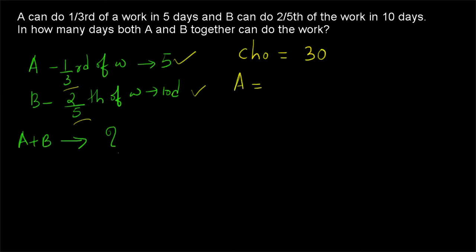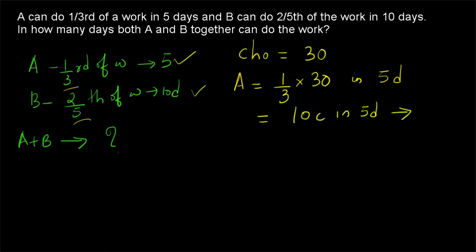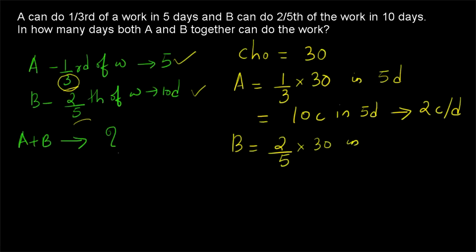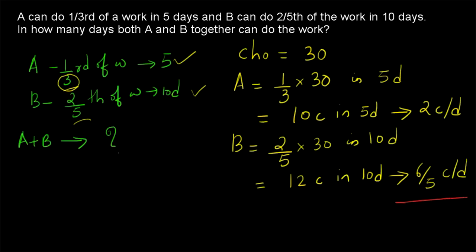A is having one-third of thirty chocolates in five days — that means A is having ten chocolates in five days, giving us two chocolates per day. For B: B is having two-fifths of thirty chocolates in ten days, which is twelve chocolates in ten days, so B is having twelve-by-ten, which is six-by-five chocolates per day. Therefore, A and B together are having two plus six-by-five, which gives us sixteen-by-five chocolates per day.